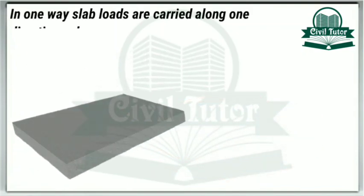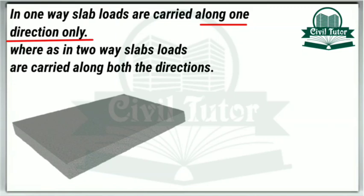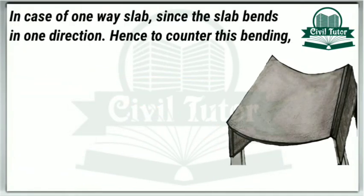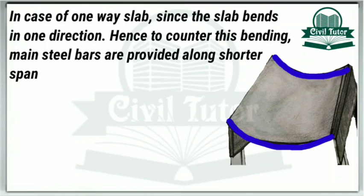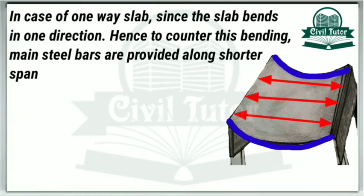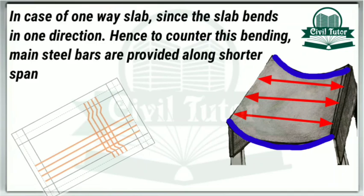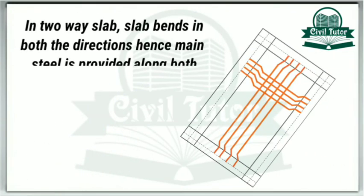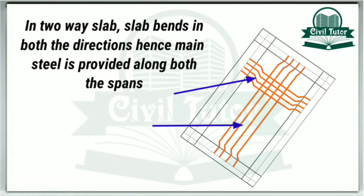In case of a one-way slab, loads are carried along one direction only, that is, along the shorter span. Whereas in a two-way slab, loads are carried along both directions. In a one-way slab, since the slab bends in one direction only, the main steel is provided along the shorter span, with distribution bars along the longer span. Whereas in case of a two-way slab, since the slab bends along both directions, the main steel is provided along both directions.